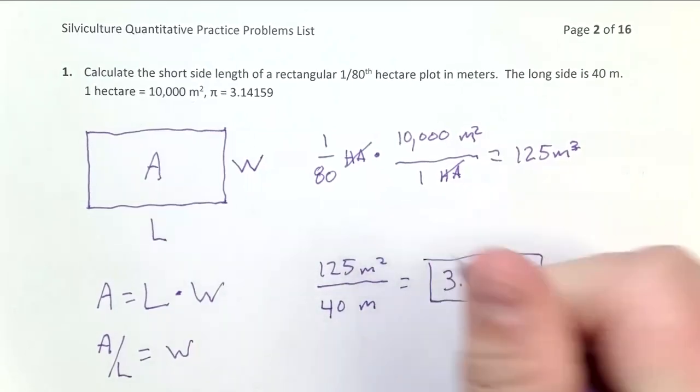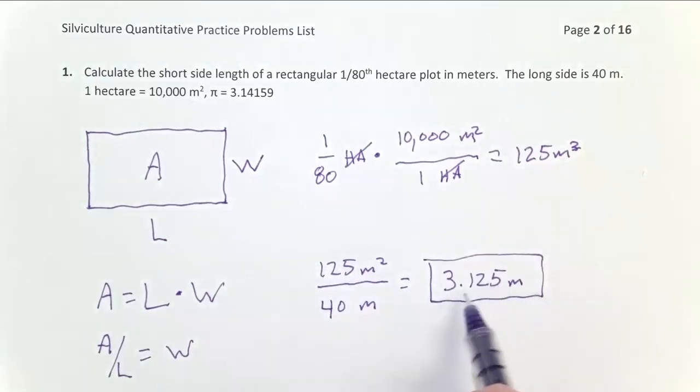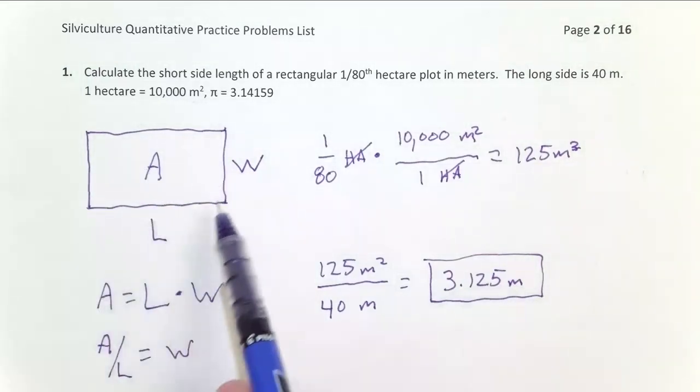And this is our final answer. Notice we've included units and the actual quantity there. So I probably drew this a little inaccurately. It would be a much skinnier looking rectangle. So that's problem one.